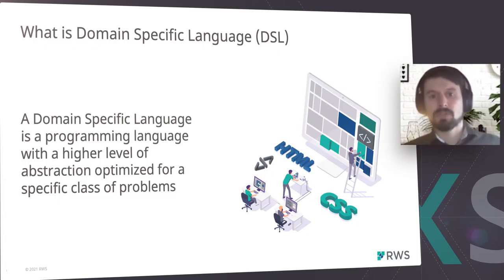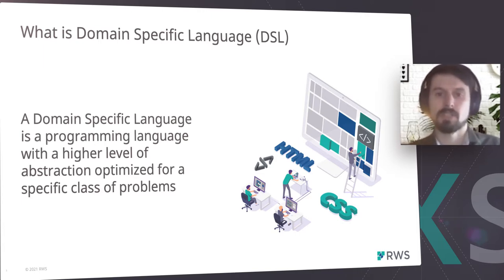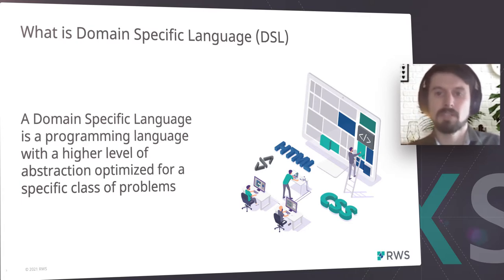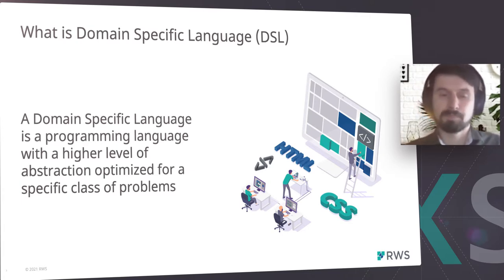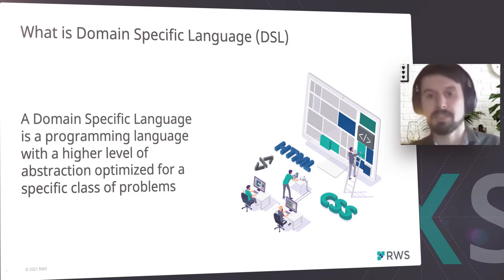So let's start first to define what is a domain-specific language. A domain-specific language is a programming language with a high level of abstraction to optimize for specific kinds of problems. Please do not confuse DSL with general programming languages like C, C++, C-sharp, or Java.